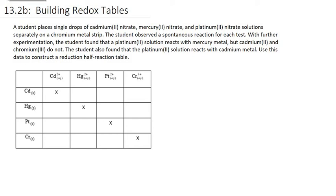Let's do some more examples of building redox tables. What we're doing here is we're taking data from experiments and turning it into a redox table that lists the relative strengths of oxidizing and reducing agents. Let's start with this example.